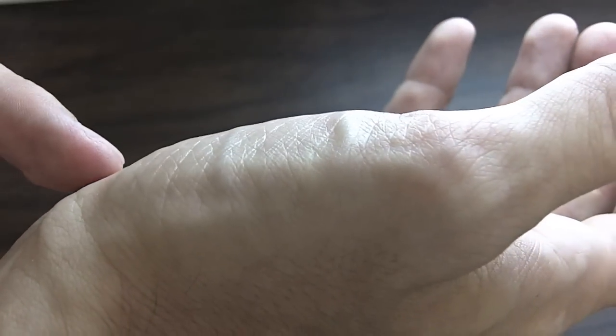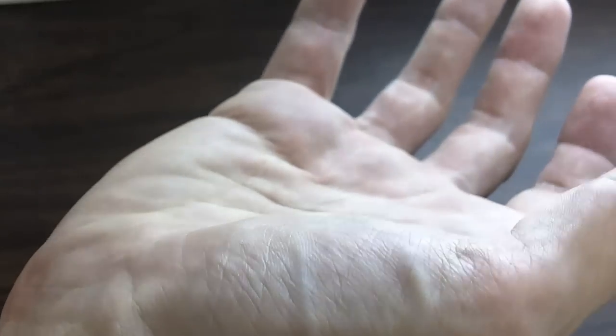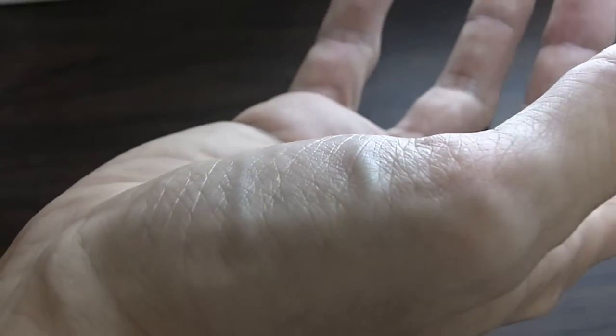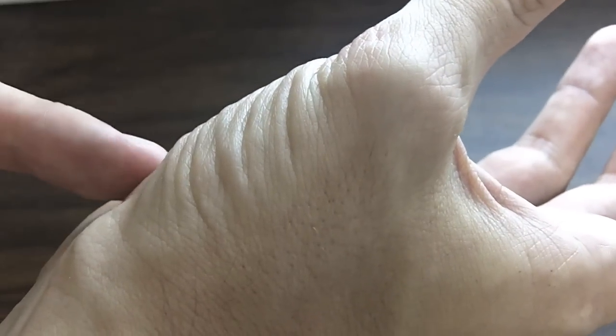Here I'm demonstrating what the normal contour of thenar muscles looks like. You can see there's a nice even bulge and curve to the base of the thumb. The skin over the muscles bulges as I raise my thumb up out of my palm.